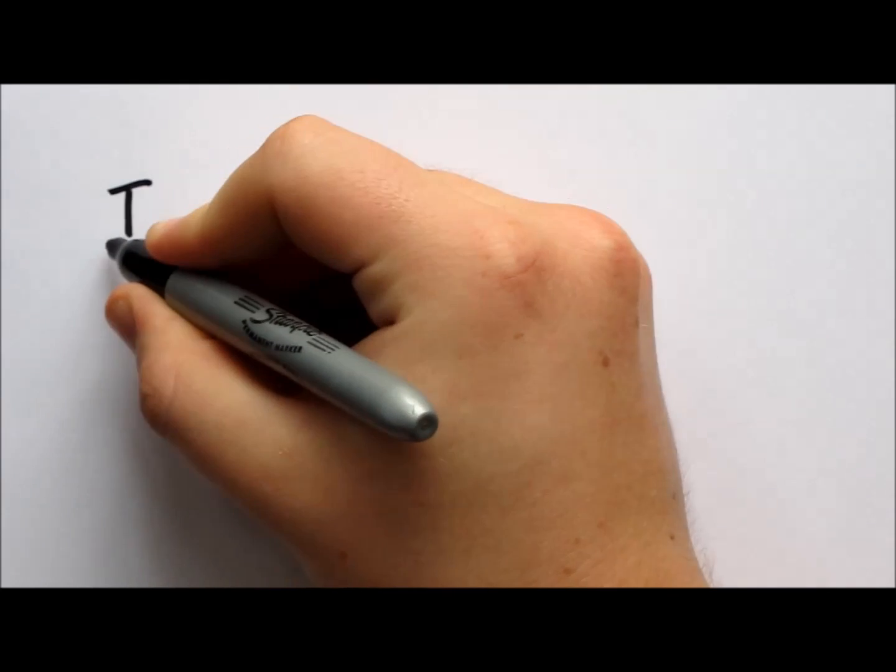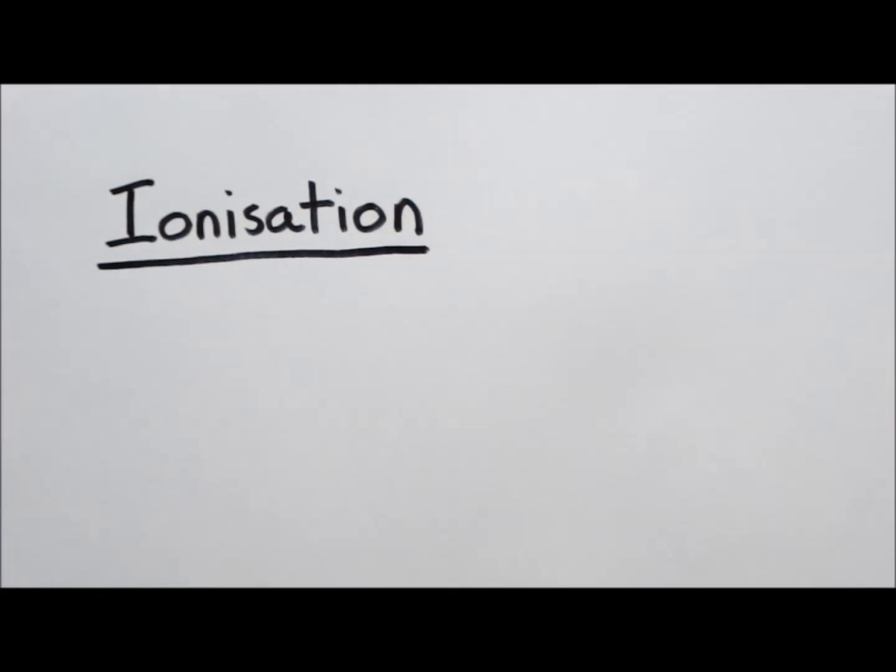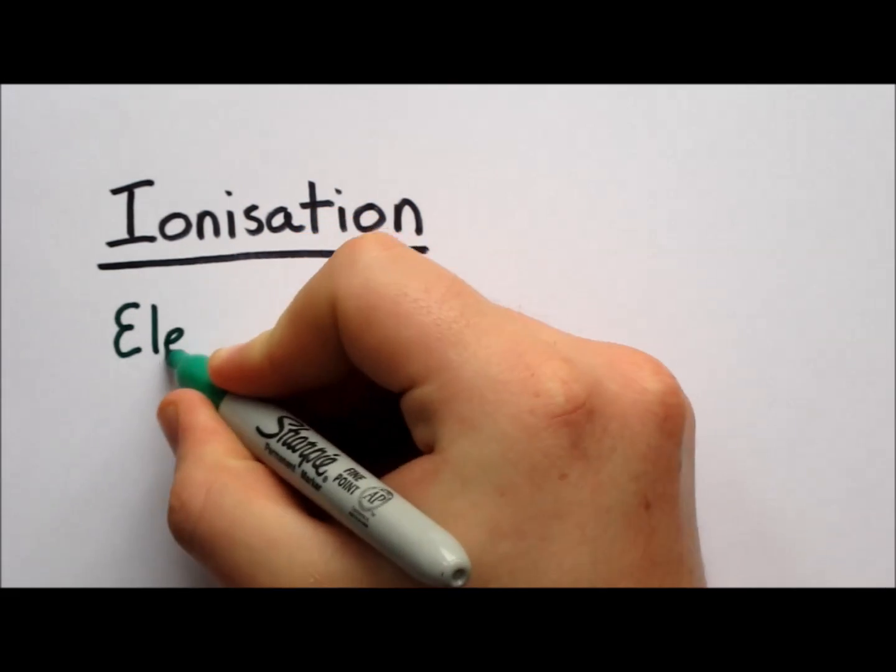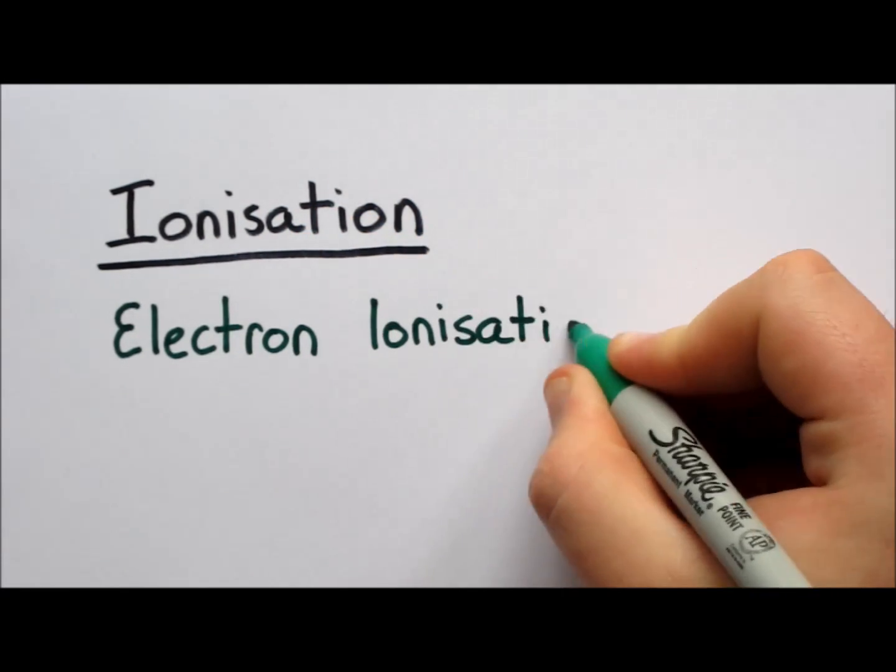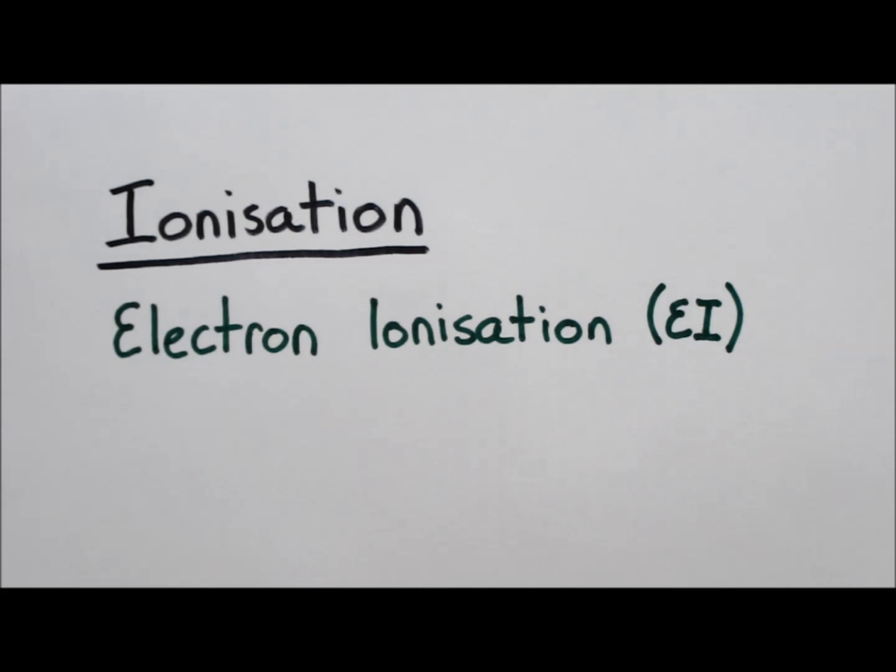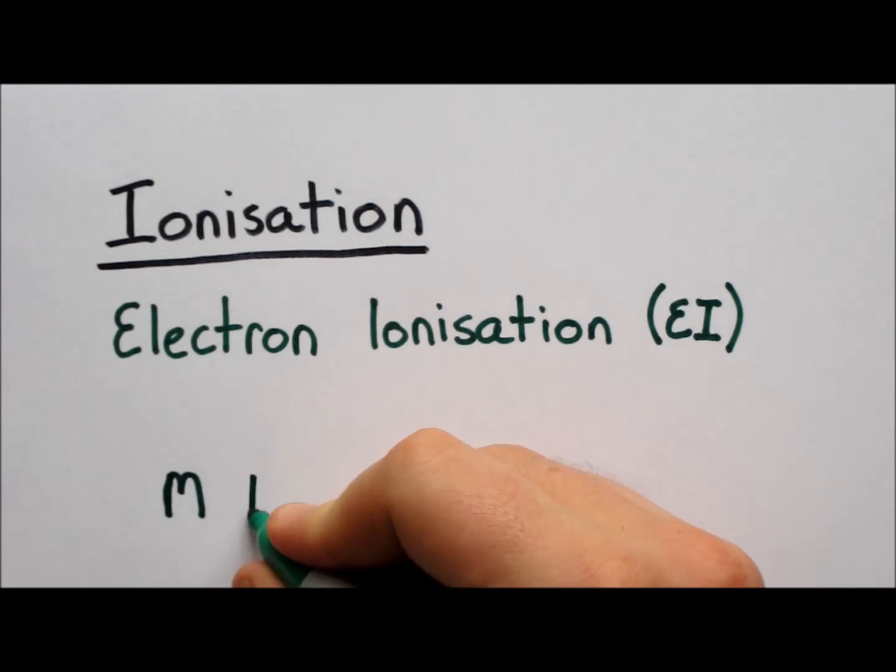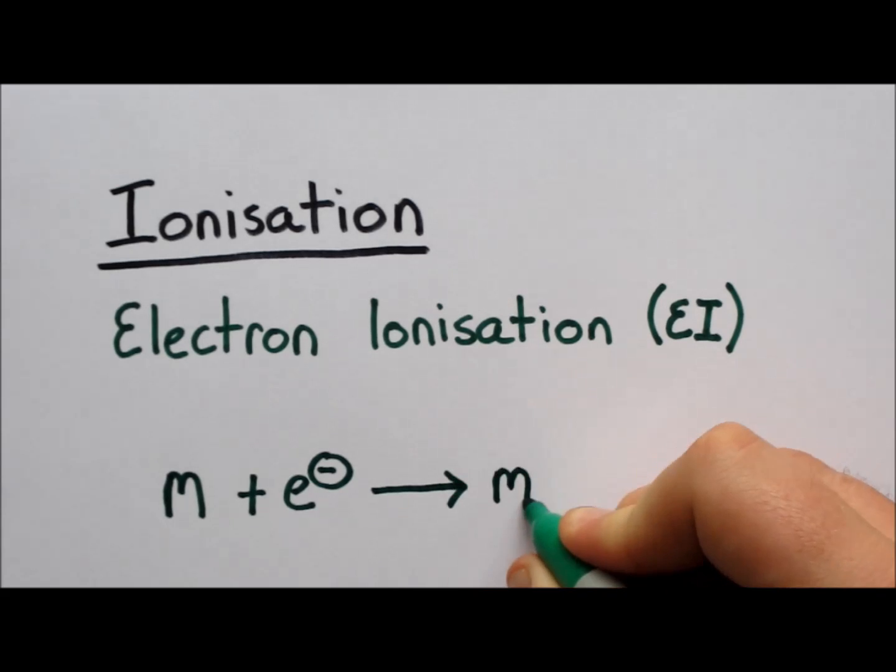Let's firstly look at ionization. There are many different ways to ionize a sample, but one of the easiest to understand is electron ionization. This is an ionization technique where a molecule is subjected to high-energy electrons that knock an electron off the molecule and form a charged radical.